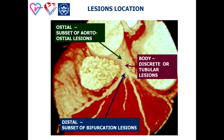Despite the short length of the left main coronary artery, there are three different anatomical parts to this important coronary segment: the ostial segment, the body or trunk (also called the middle segment), and the distal bifurcation segment. The ostium is a site of aorto-ostial lesion, the body is a site of tubular lesion, and the distal is a site of bifurcation lesions.